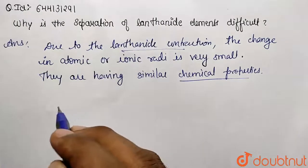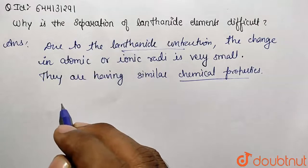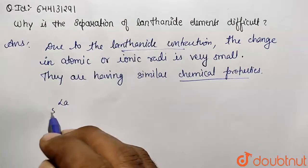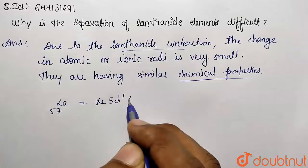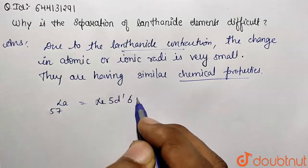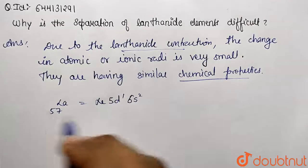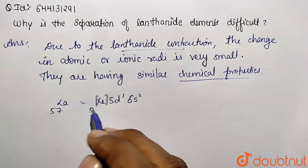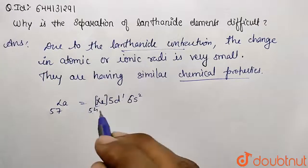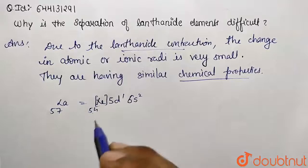So what happens if I want to take example of lanthanum? This is lanthanum, I have taken 57. Its configuration is what? Xenon, then comes 5d1, then comes 6s2. So this is 57. Xenon we have done till 54, so this is total 57 we have adjusted. So this is configuration for lanthanum.